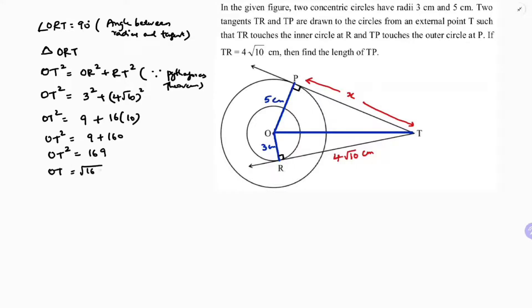So OT is √169. 169 is a perfect square of 13. So OT is 13 cm.